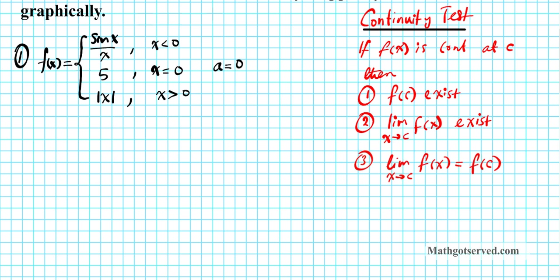Starting with test 1: does f(c) exist? Since a = 0, we ask what is f(0). Does it have an output value in this piecewise function? It certainly does — the output value is 5. So it passes the first test.